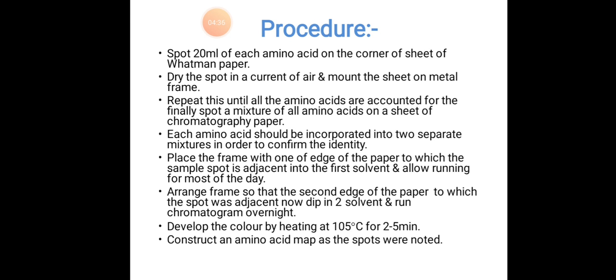Arrange frame so that the second edge of the paper to which the spot was adjacent now dips into solvent and run chromatogram overnight. Develop the color by heating at 105°C for 2 to 5 minutes. Construct an amino acid map as the spots were noted.